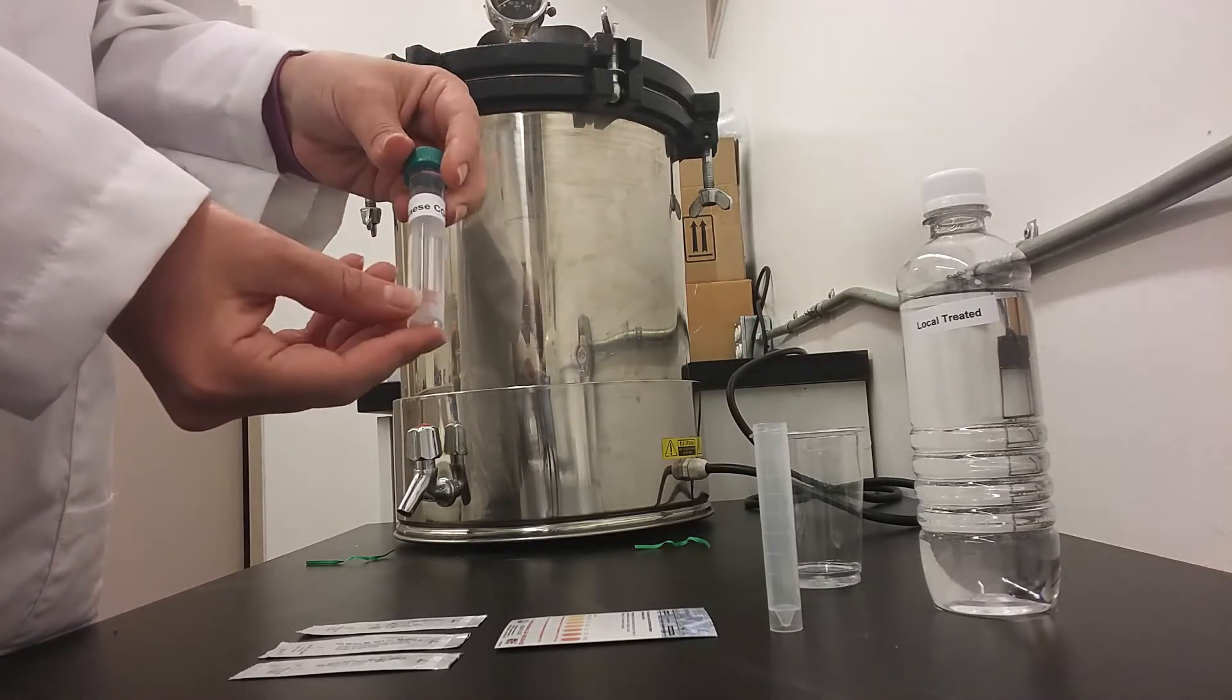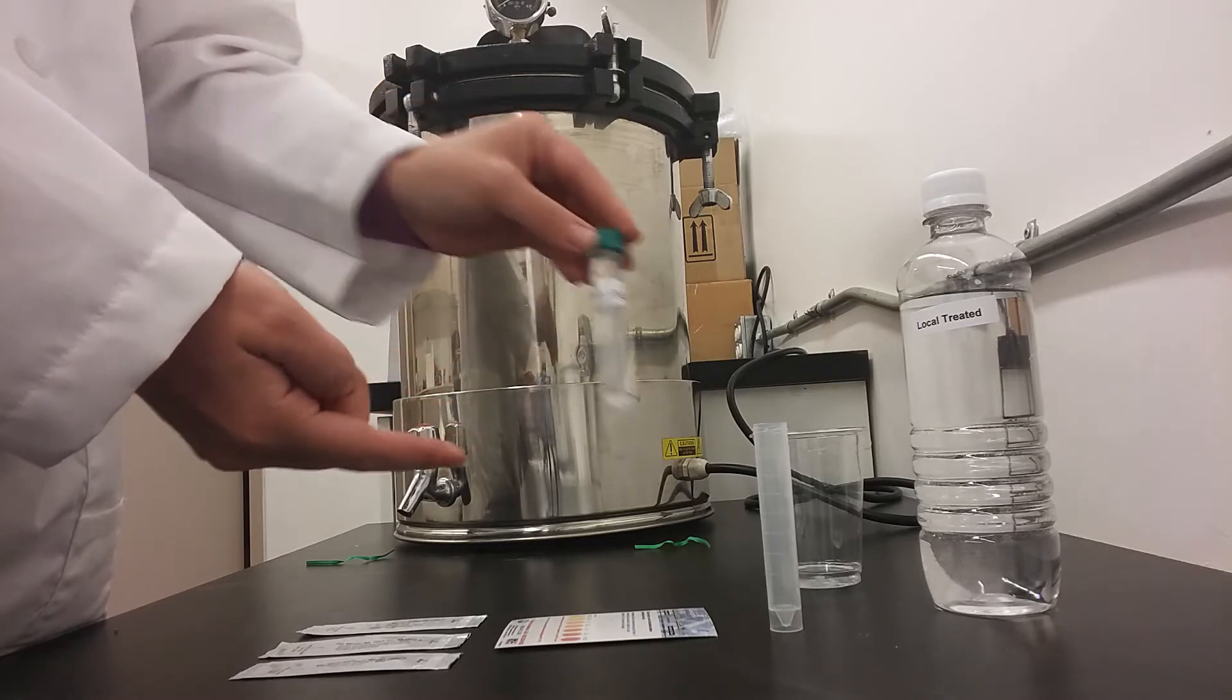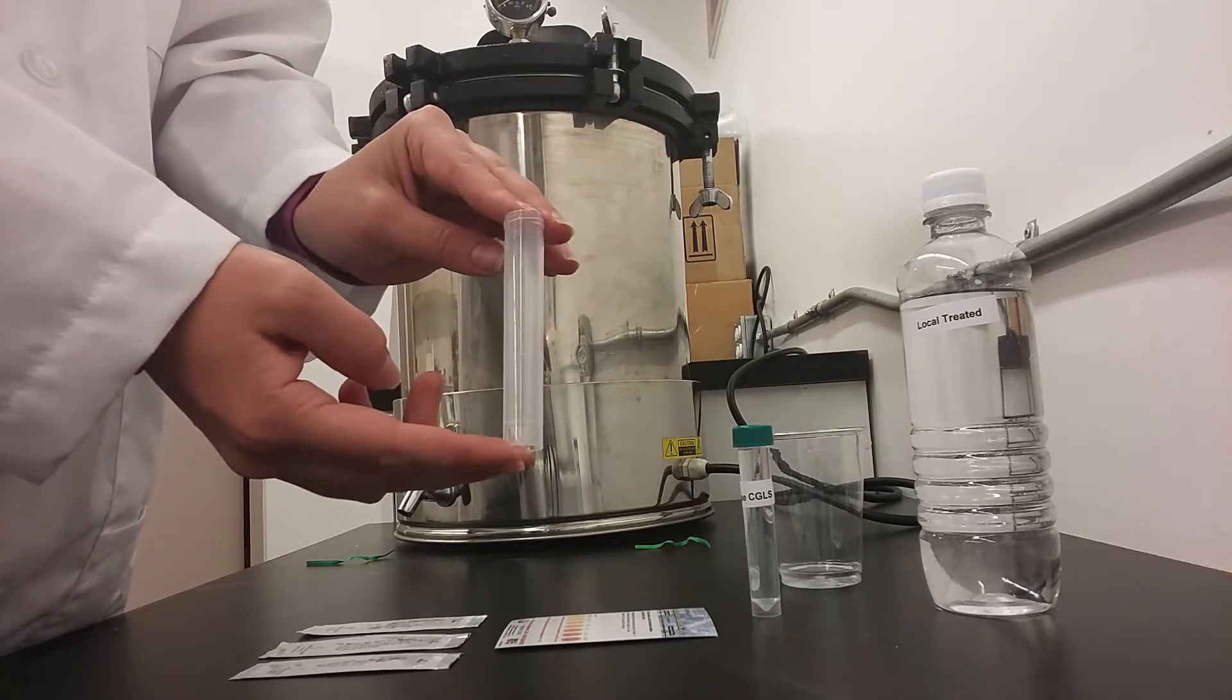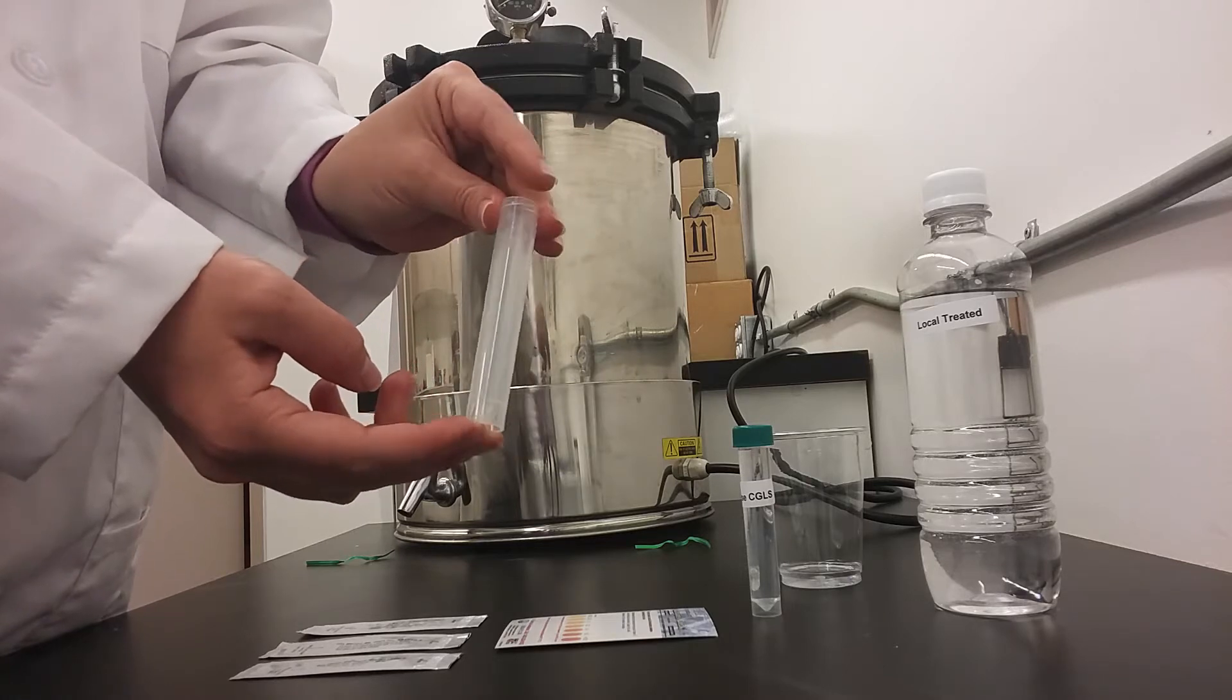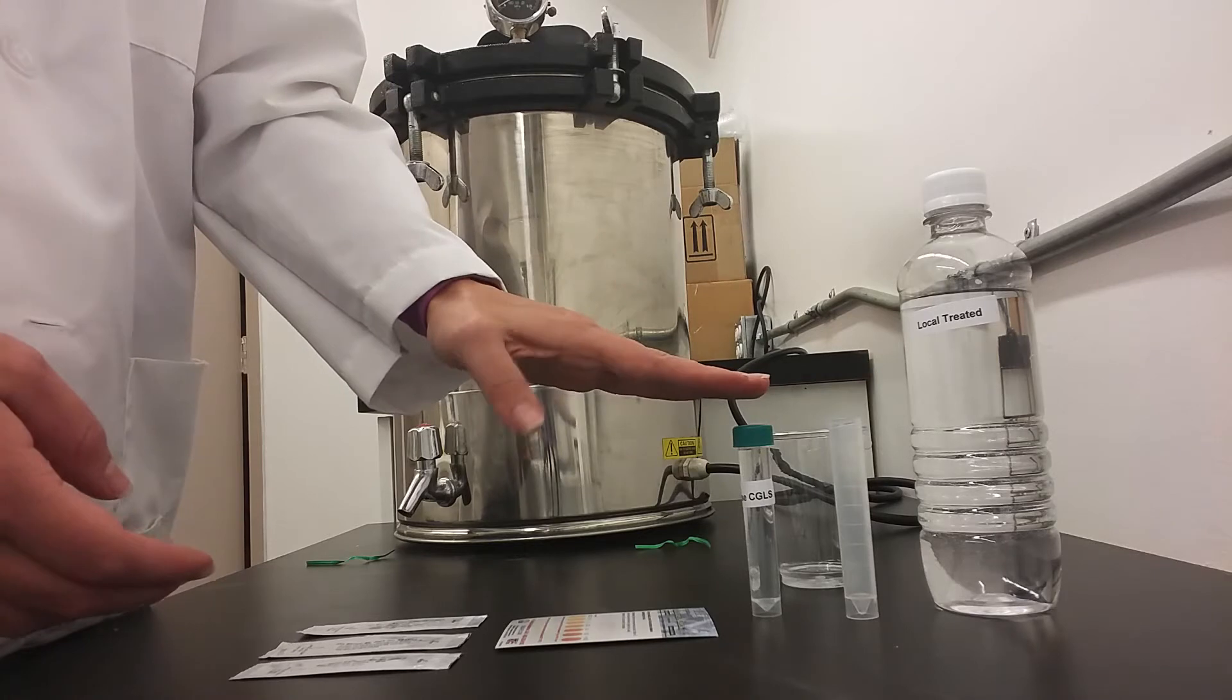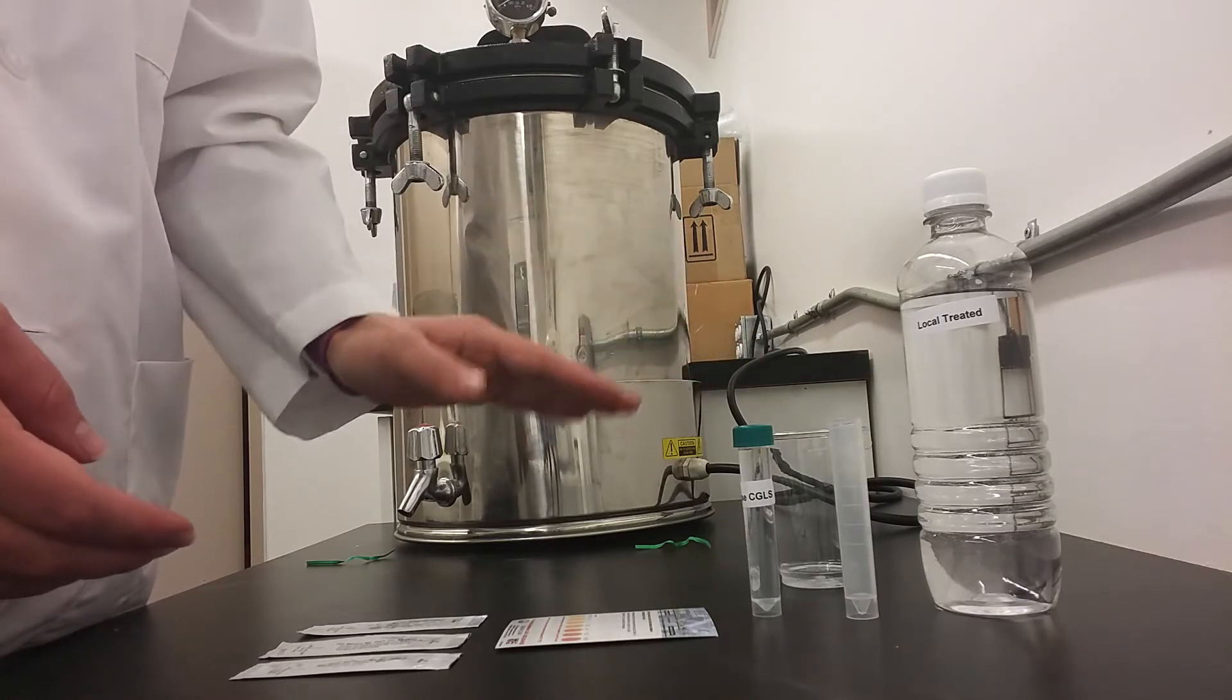For this one we will be using the manganese sample that comes with your test kit. The test kit also includes empty vials for testing different sources of water that you choose to test, but for this demonstration we'll be only using the manganese sample that came with the kit.